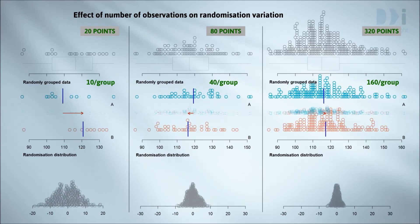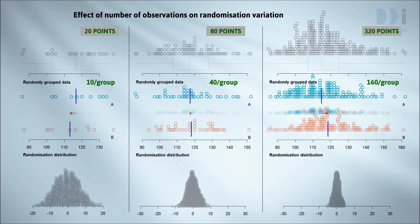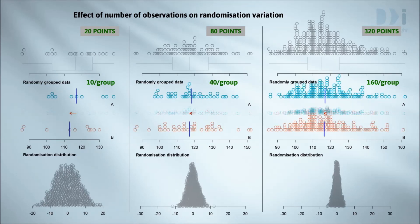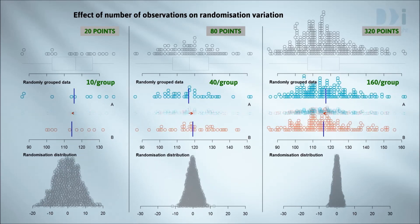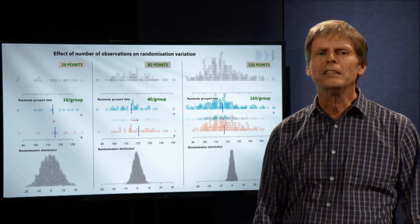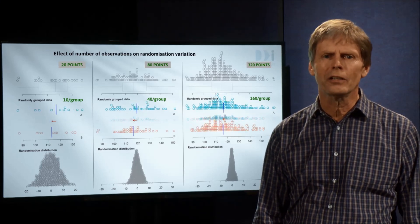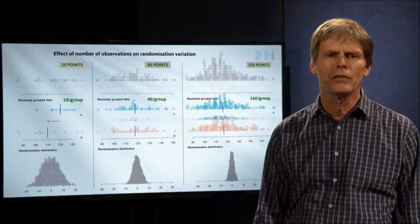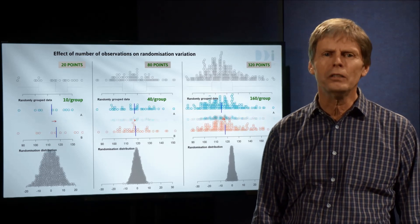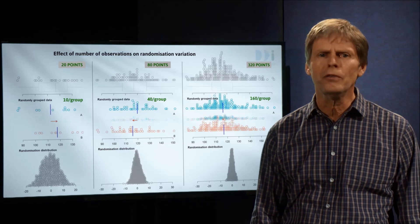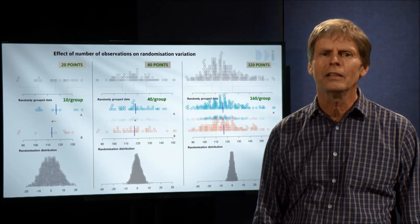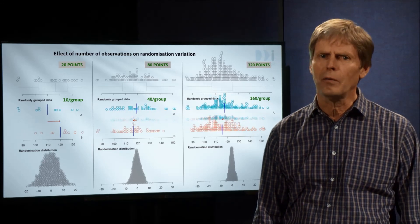As with sampling, every time we multiply the number of points by 4, we halve the amount of randomization variation. But whereas major clinical trials in medicine may have thousands of observations and thus low randomization variation, experiments on industrial processes where obtaining each observation can be hugely expensive, tend to have small numbers of observations.